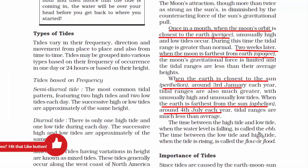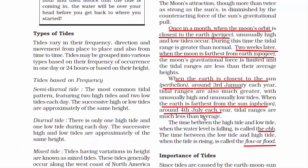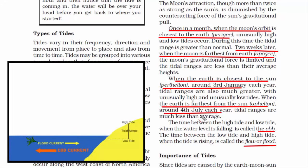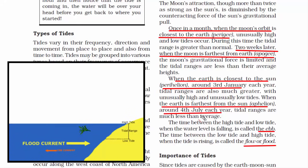Ebb and flow are two phases of the tide. The ebb is the outgoing phase — when the water level is falling. The flow is the incoming phase — when the water rises again.